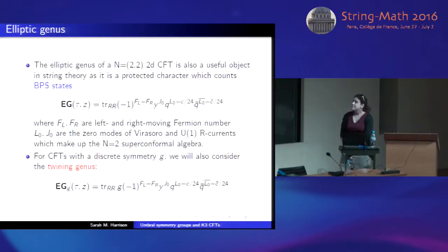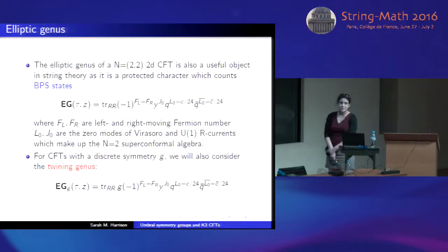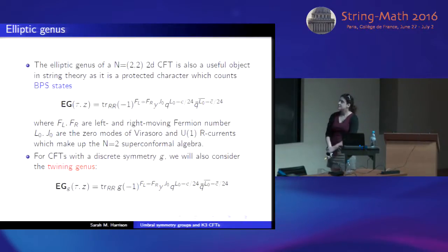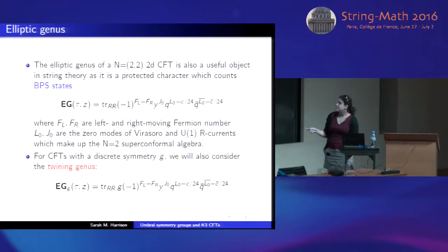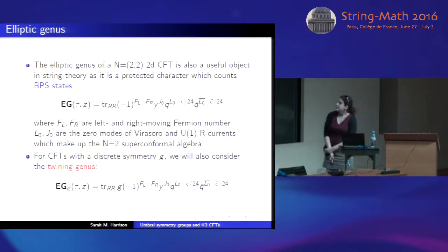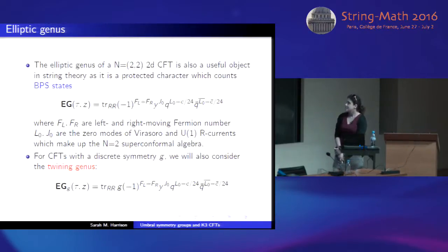The main object I'm going to be focusing on is the elliptic genus of a sigma model with target space K3. Here I have the definition of the elliptic genus for a general N=(2,2) two-dimensional conformal field theory. It's given by the following trace, where FL and FR are left and right moving fermion number, and L0 and J0 are zero modes of the Virasoro and U(1) R currents, which make up the N=2 superconformal algebra on the worldsheet.